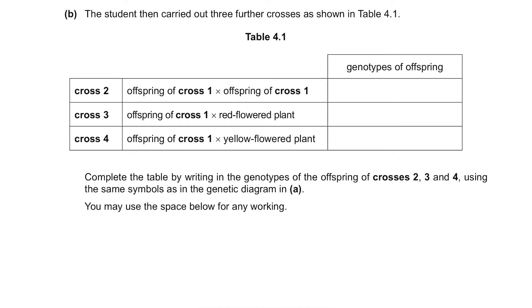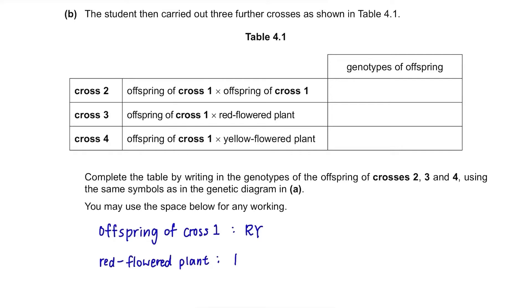Part B. The student then carried out three further crosses as shown in Table 4.1. Complete the diagram by writing in the genotypes of the offspring of crosses 2, 3, and 4 using the same symbols as in the genetic diagram in Part A. Let's first write down the genotypes: offspring of cross 1 is R-Y, red flowered plant is R-R, and yellow flowered plant is Y-Y.